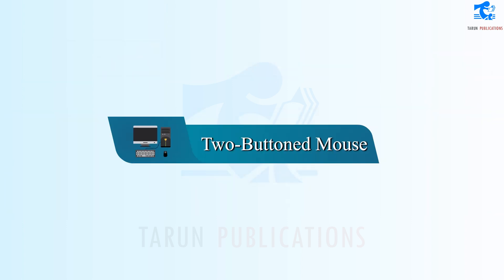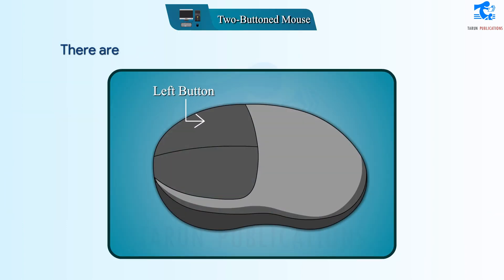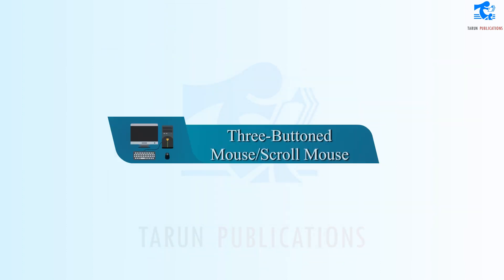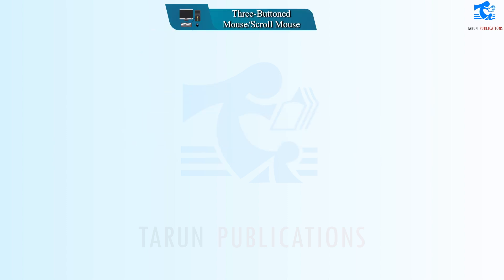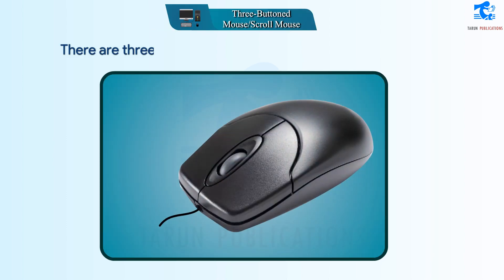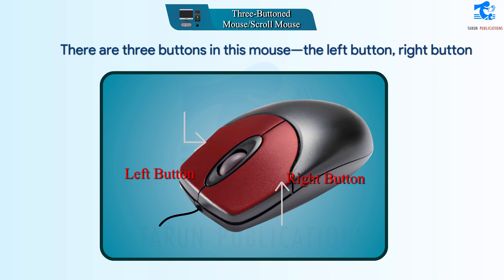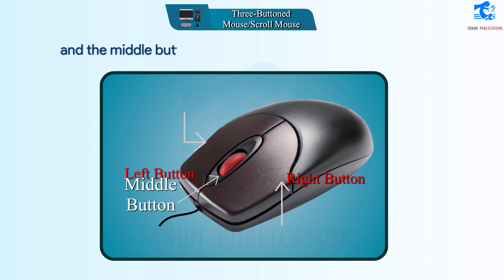Two-button mouse: There are two buttons in this mouse — the left and the right button. Three-button scroll mouse: There are three buttons in this mouse — the left button, the right button, and the middle button, which is the scroll wheel.